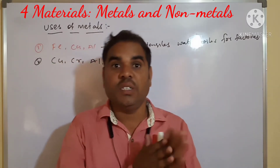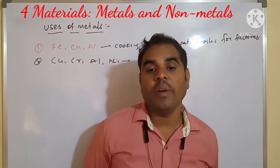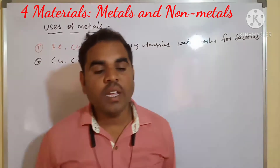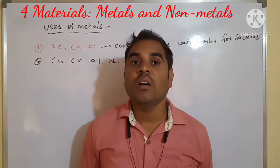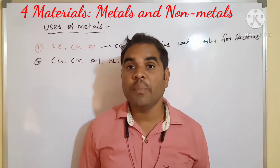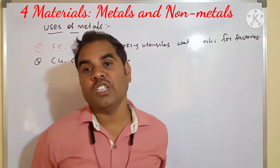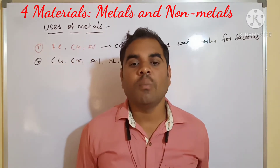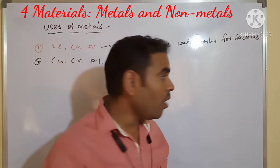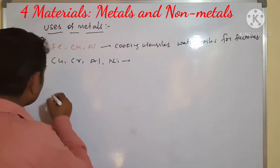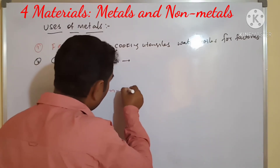Mercury is used in thermometers. In our body, cobalt, ferrous, calcium, magnesium, potassium, and sodium — a number of metals are used for metabolism.